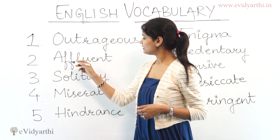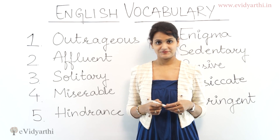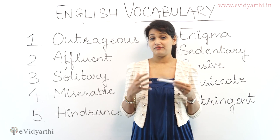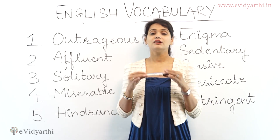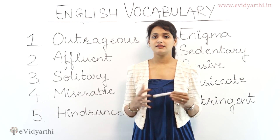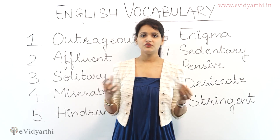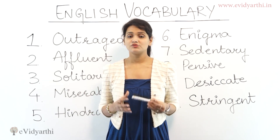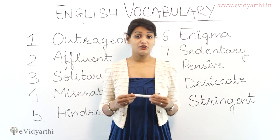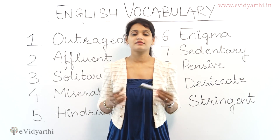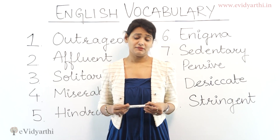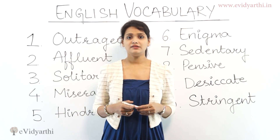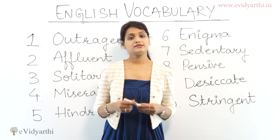The next word is 'affluent'. Affluent refers to people who are very wealthy, very rich. This word describes a group of people who are very rich and wealthy. For example, you can say: looking at her dressing, it seems like she belongs to affluent people — she must be very rich. Smoking is very common among affluent people. This is how you use the word 'affluent'.